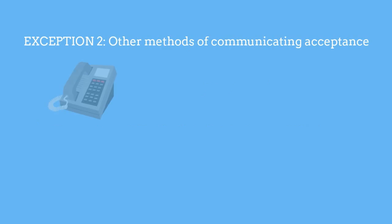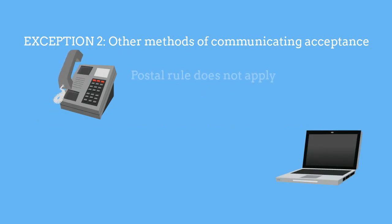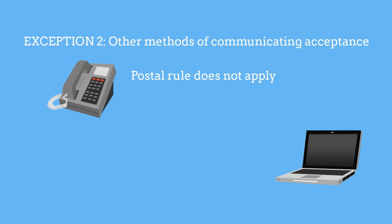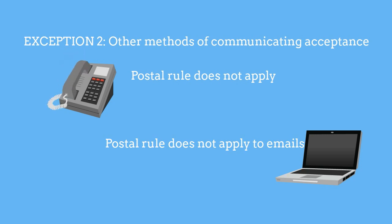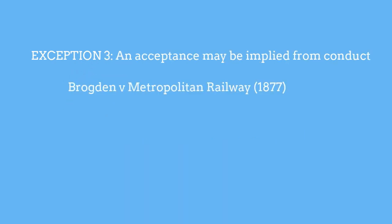Exception number two: other methods of communicating acceptance, such as telephone and email. For telephone communication, the postal rule does not apply — a person making the acceptance will know if the communication was not received and will need to try again. For emails, the case law is somewhat convoluted, but in Thomas v BPE (2010) the High Court said, although it was obiter, that the postal rule does not apply to emails. The ordinary rules apply — an acceptance takes effect when it is received, although the court said that 'received' means arriving in an inbox, not when it has actually been read.